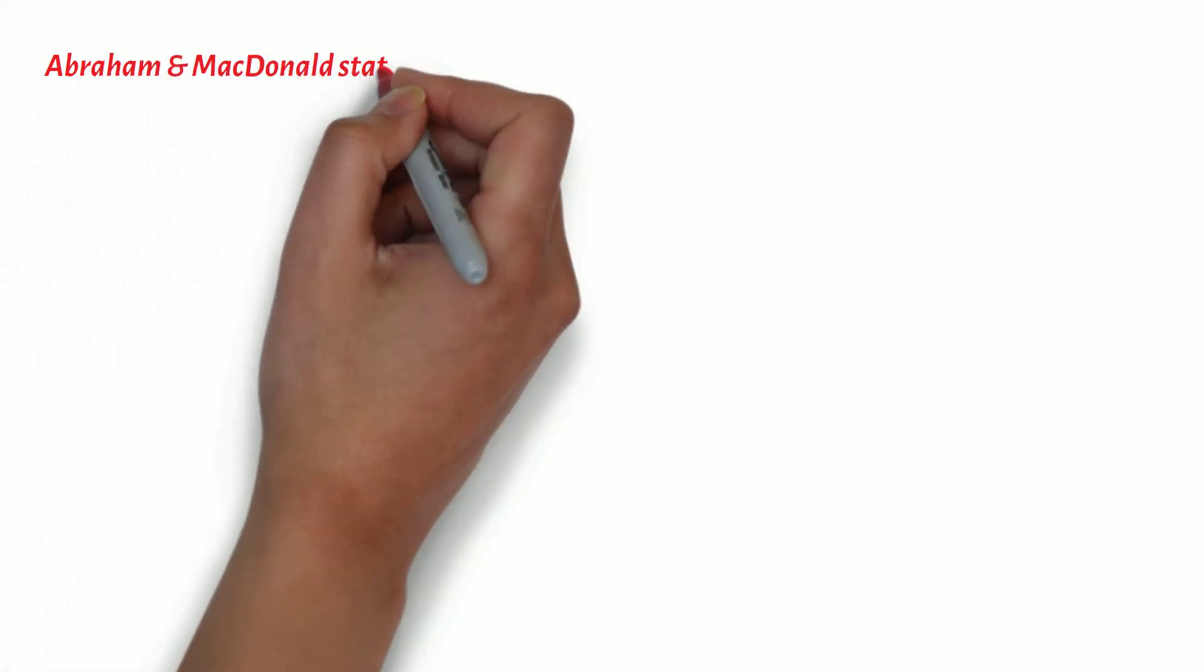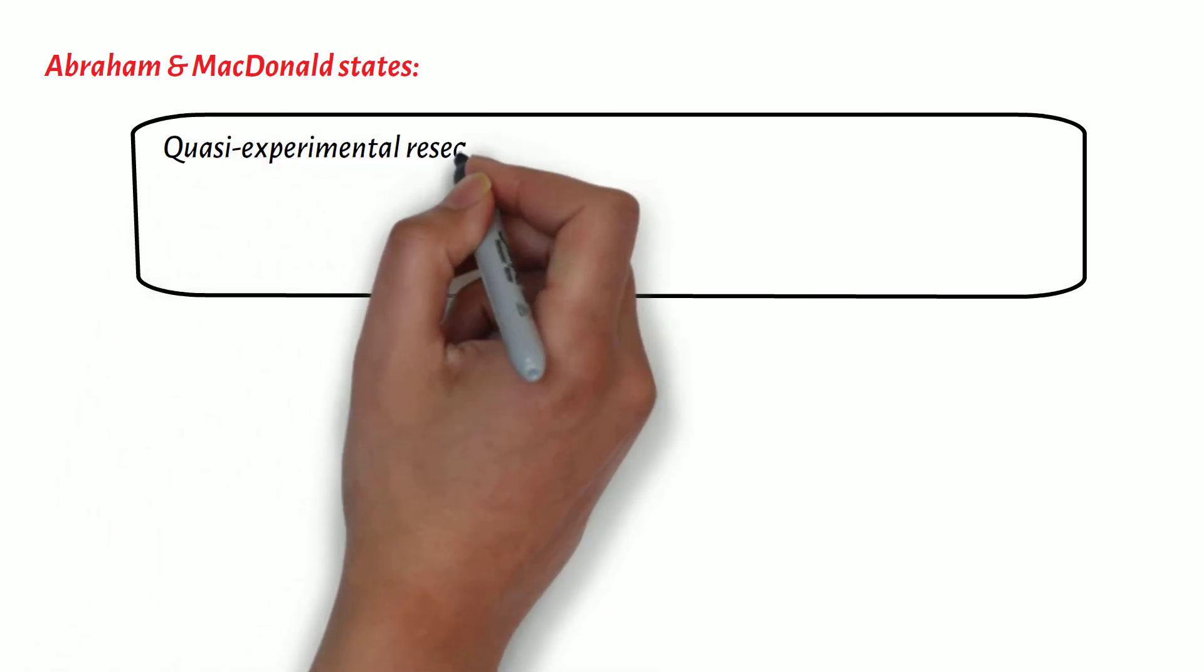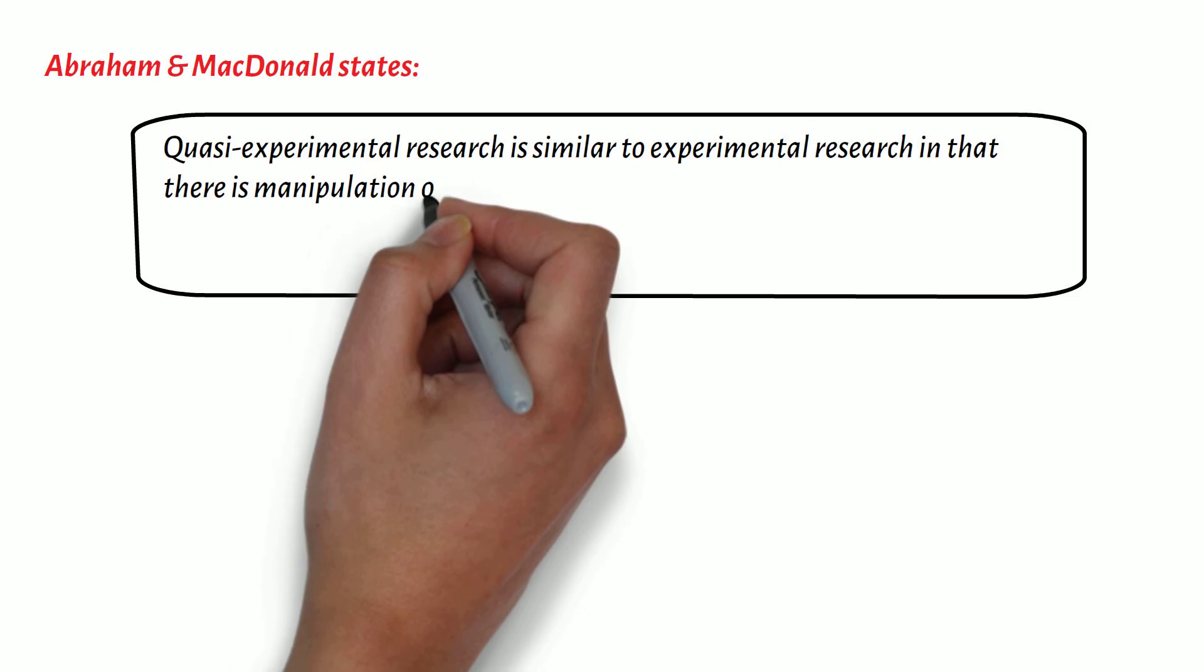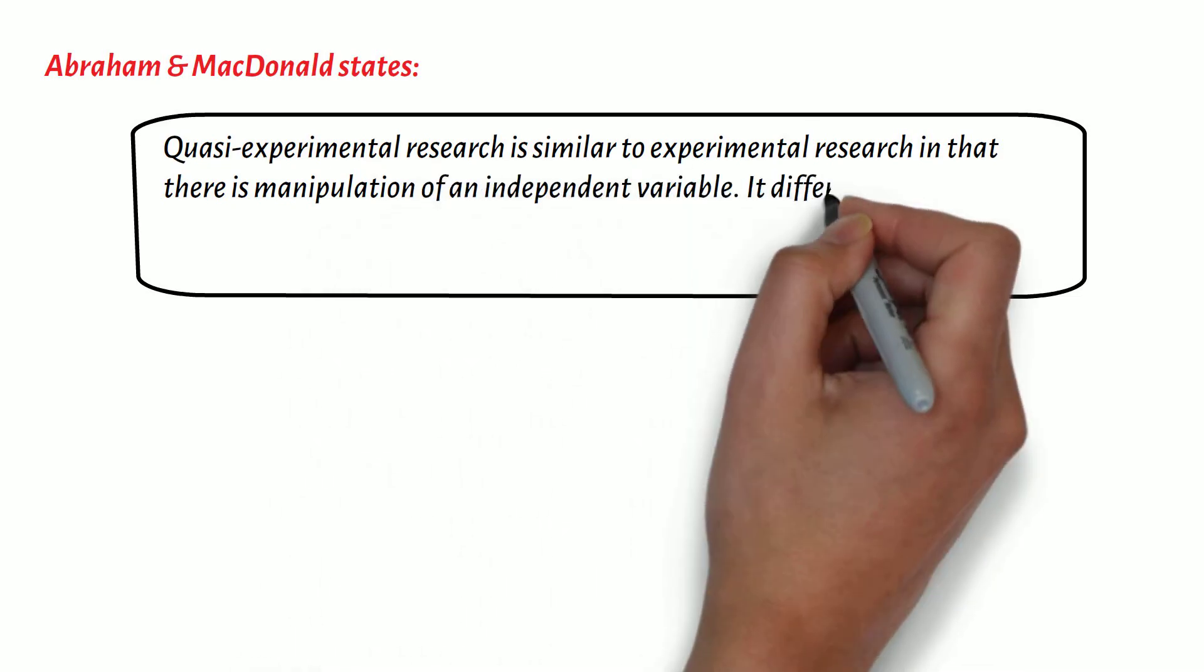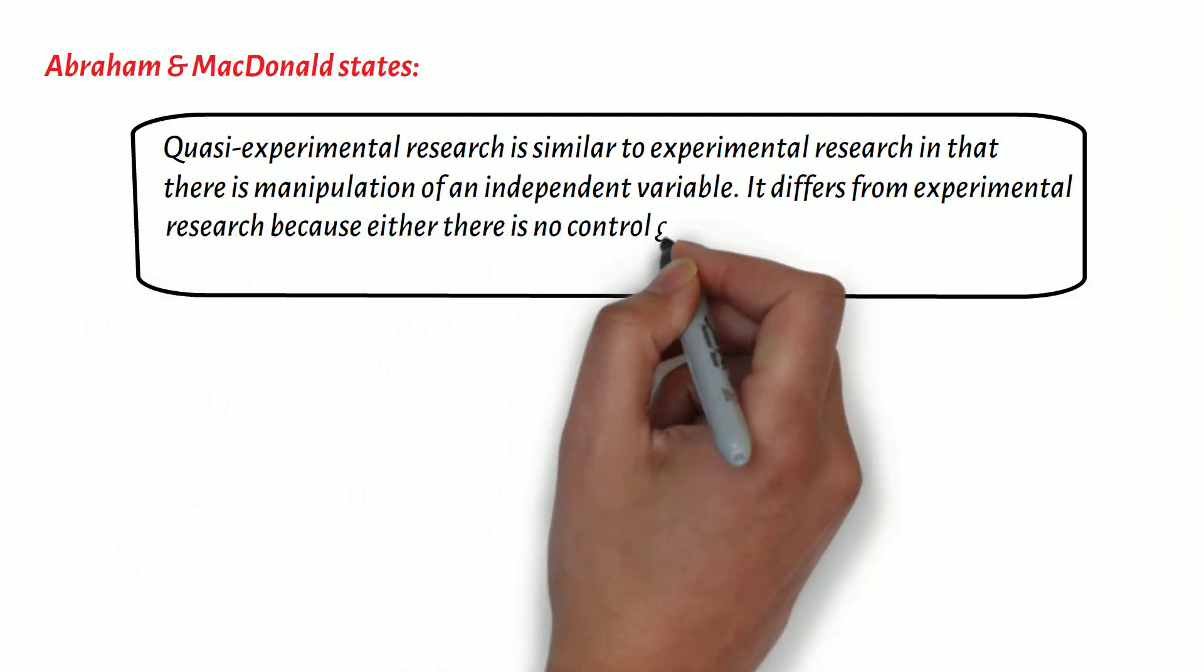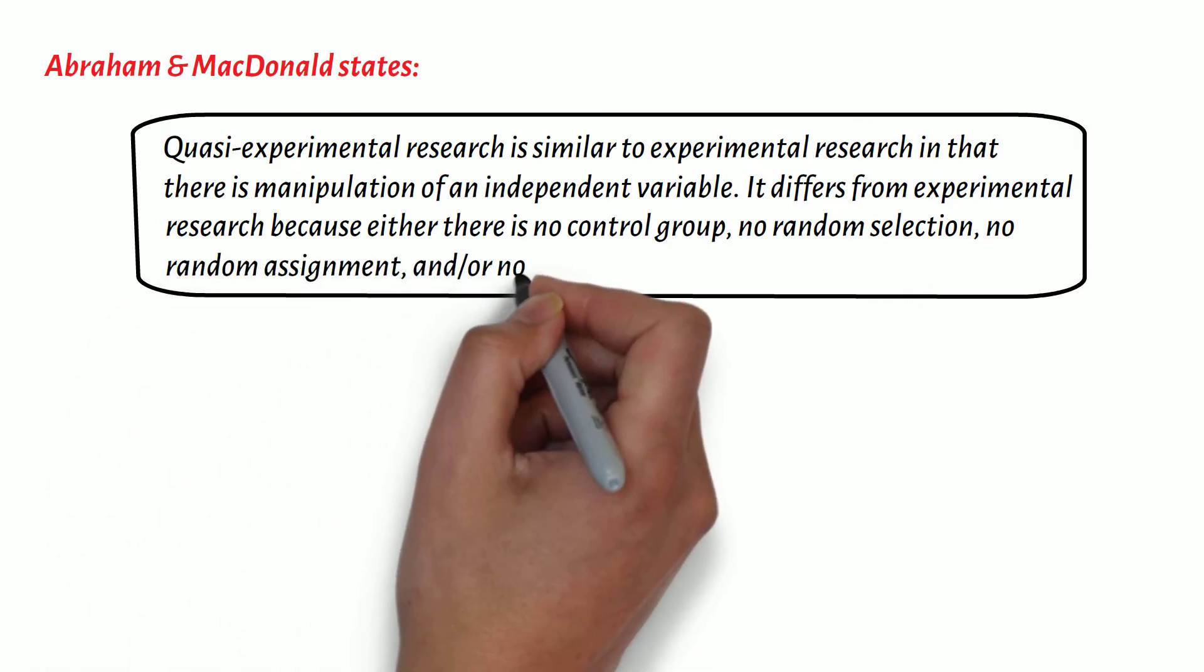As Abraham and MacDonald states, quasi-experimental research is similar to experimental research in that there is manipulation of an independent variable. It differs from experimental research because either there is no control group, no random selection, no random assignment, and or no active manipulation.